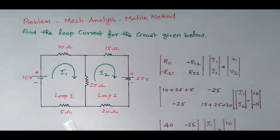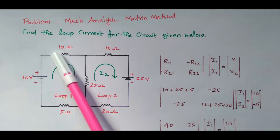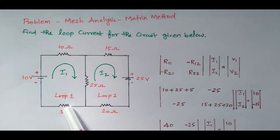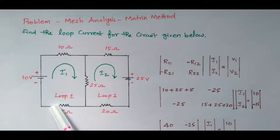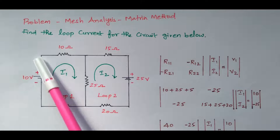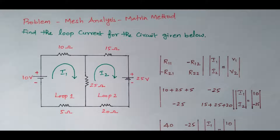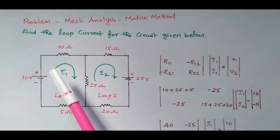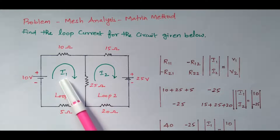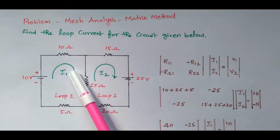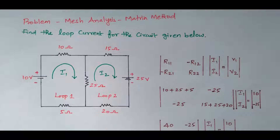By seeing the diagram, we can easily identify this is loop one — we can consider this as loop one. A loop is nothing but a closed path, and this is one closed path. The current flowing through this closed path is I1, flowing in the clockwise direction.